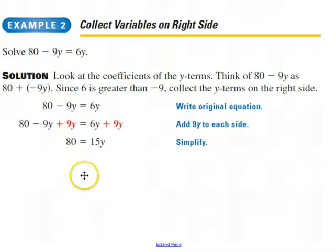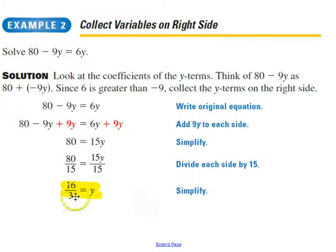These negative and positive 9y's canceled, and I just have 80. If 80 is equal to 15y, all I have left to do is divide both sides by 15. And 80 divided by 15 simplifies down to 16 over 3. And that's the answer you should have gotten for this question. You might have done it with a calculator, and you might have said it was 5.333. That's fine.